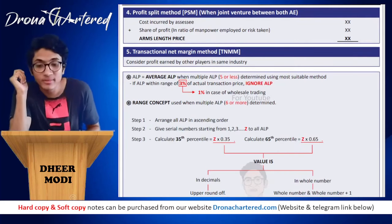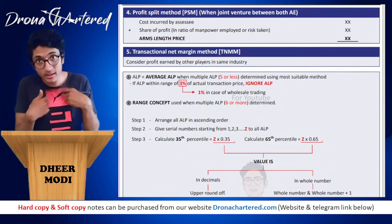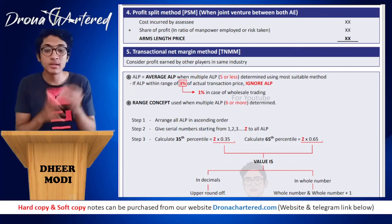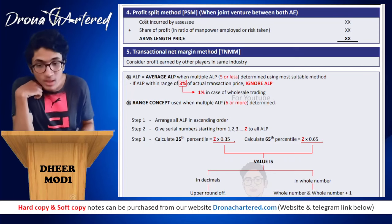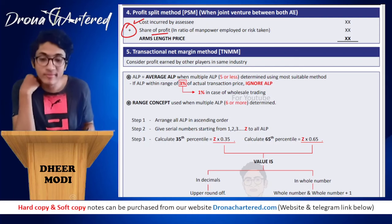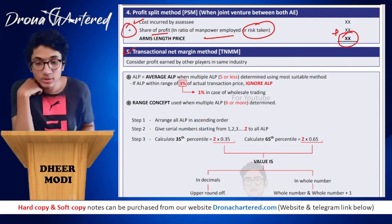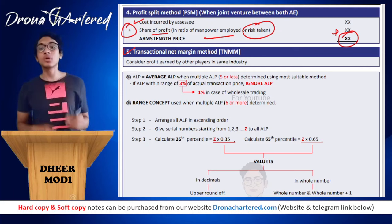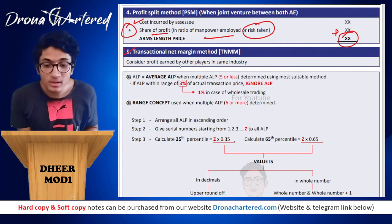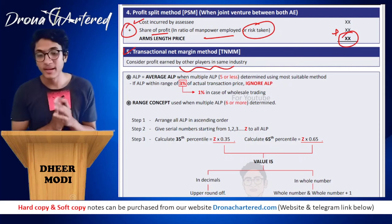The fourth method is the Profit Split Method, used when entering into a joint venture. The arm's length price is: cost incurred by each party plus their share in profit. The profit sharing ratio is determined based on manpower employed or risk taken. The fifth and last method is the Transaction Net Margin Method (TNMM), where you consider profit earned by other players in the same industry to determine the arm's length price. The most important and most frequently examined method is CUPM.